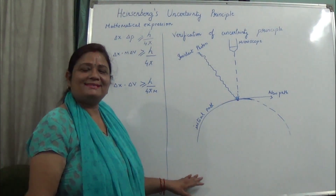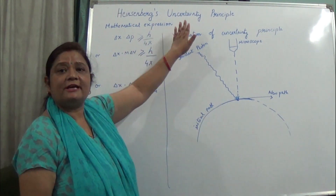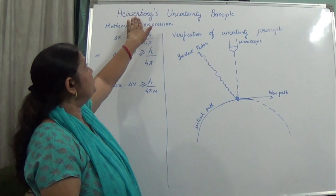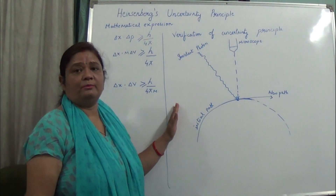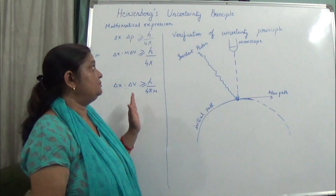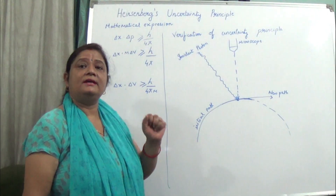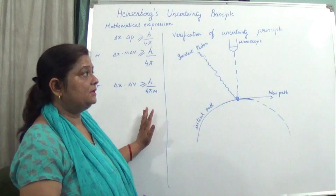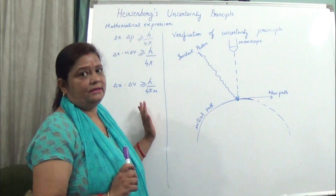Hello students. We are going to study Heisenberg's Uncertainty Principle. Heisenberg said that for microscopic bodies it is impossible to determine the position and velocity simultaneously at a particular time with absolute certainty.